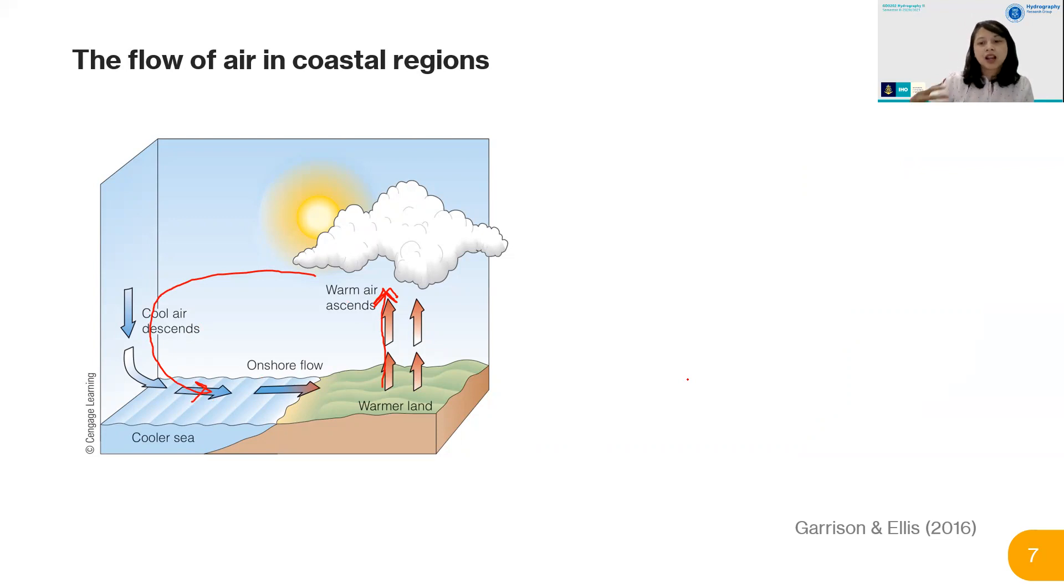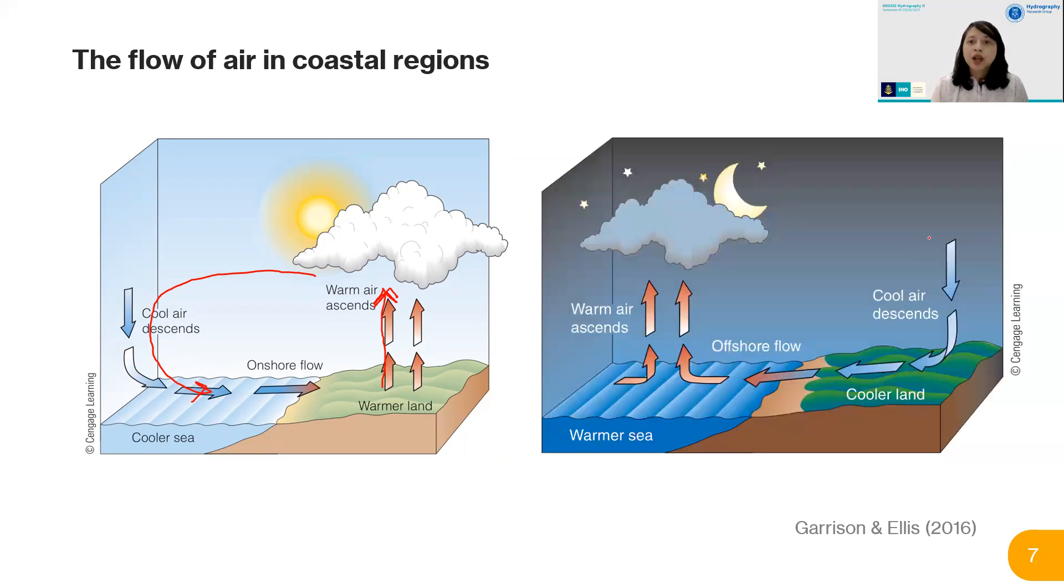This is what makes sailors or fishermen return at daylight. But at night, it's the other way around—the land is cooler, so air descends over land and ascends at the sea. That's why fishermen go to sea at night with angin darat, or land breeze.